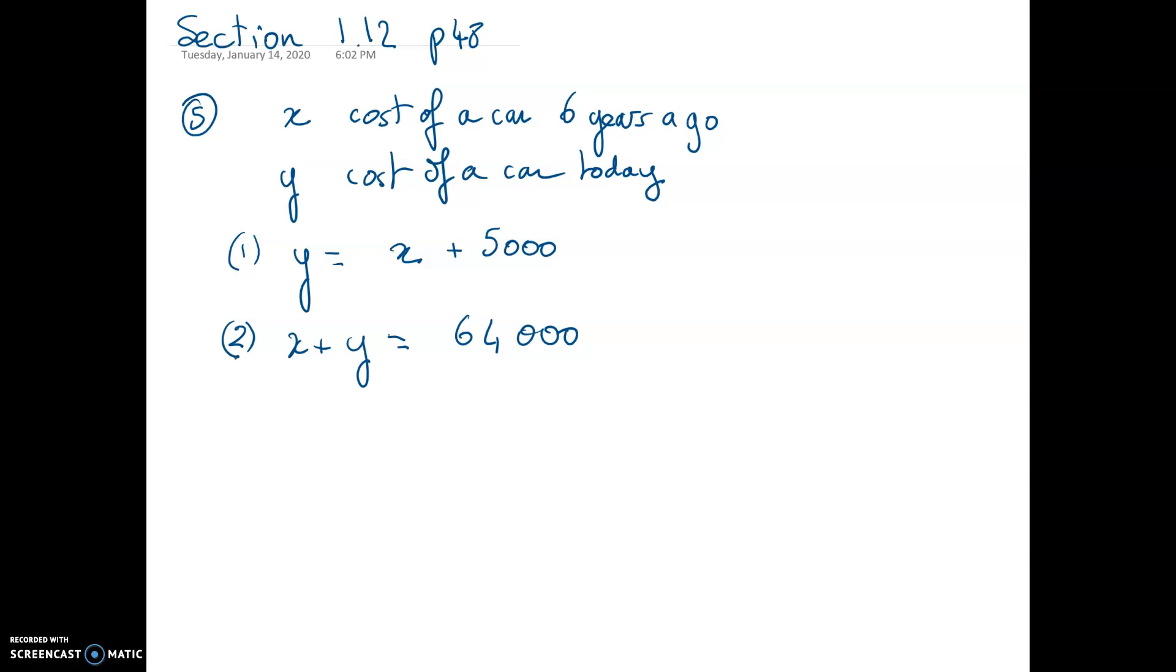They are also telling you that the sum of x plus y is supposed to be equal to $64,000. So now you have a second equation. When you look at these two equations, you have two equations and two variables.